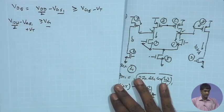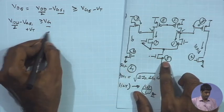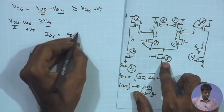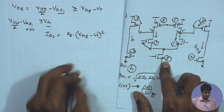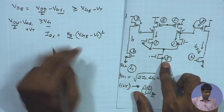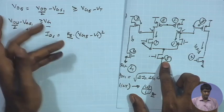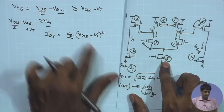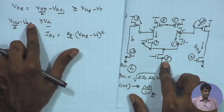VG5 should be less than or equal to VDD/2 minus VGS1 plus Vt. This is the maximum value of VG5 needed. We know that VG5 is ultimately determined by the bias current and W/L of M5. So ID5 equals K5 times (VGS5 minus Vt) squared, and from here I can set the desired K5 to obtain a VG5 within the limit.